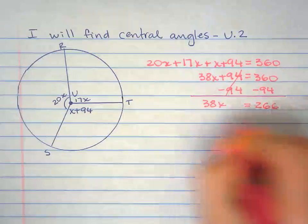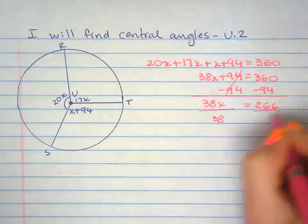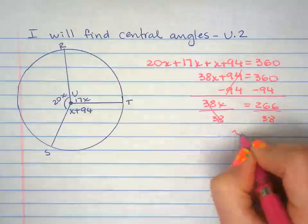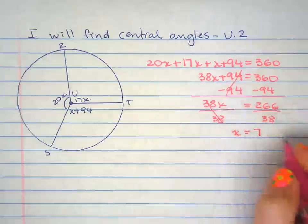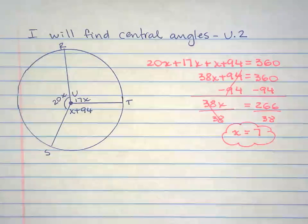This is 266. Dividing both sides by 38, you get 7. So x there is 7.